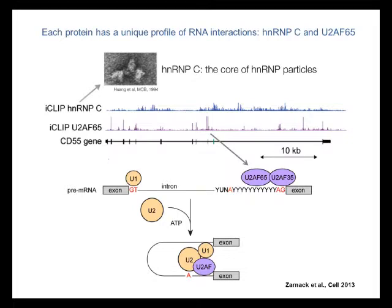You can see on this diagram that binding of HNRNPC, which is shown in the blue bar graph, is dispersed and present across the whole gene. The structure of the CD55 gene is shown underneath, and you can see the position of exons as black bars, whereas the intron is shown as a thin line. The binding of U2AF65 is restricted to the positions just upstream of every exon.